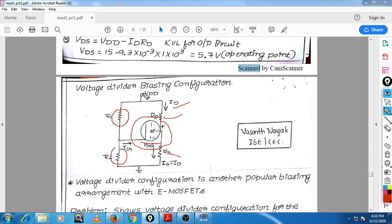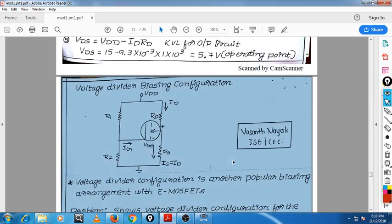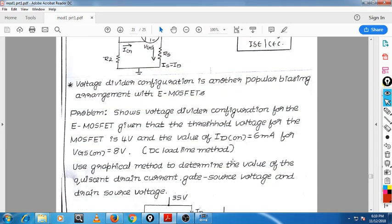So voltage is provided to the input through this divider configuration. Now we have to solve the problem with respect to the above voltage divider configuration. It is given that the threshold voltage for the MOSFET is 4 volt, and ID1 for some value of VGS1 is 8 volt. So you can use a DC load line method and also an alternative graphical method to determine the value of the coefficient, drain current, gate-source voltage, and drain-source voltage.